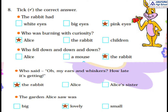Next: who fell down and down and down — Alice, a mouse, or the rabbit? The correct answer is the rabbit. At first the rabbit fell down and down, and with the rabbit Alice also fell down and down.